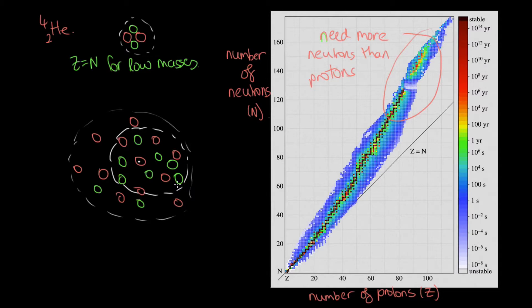And this actually limits the size to which we can have stable nuclei, because at some point this electrostatic repulsion is going to overcome that strong nuclear force.